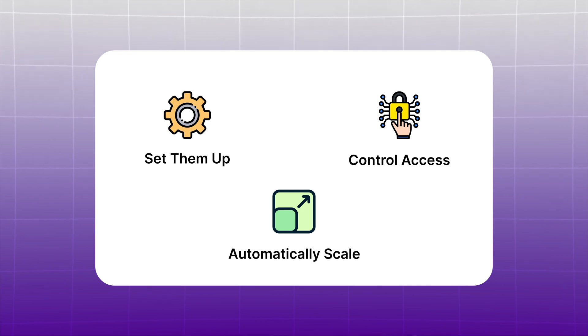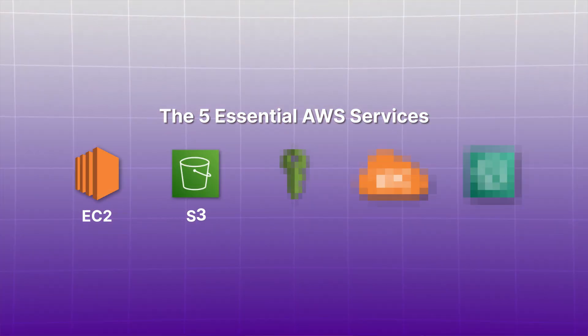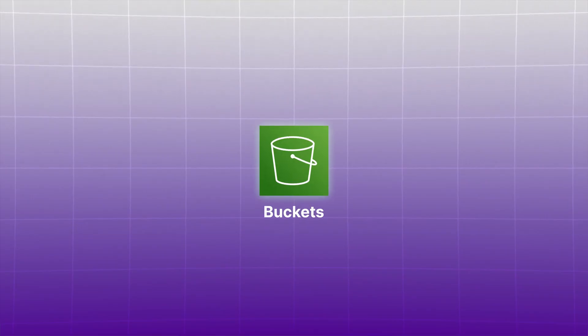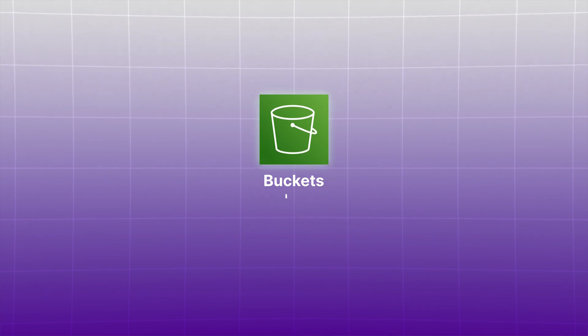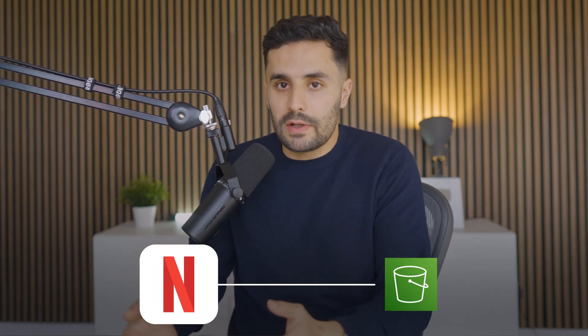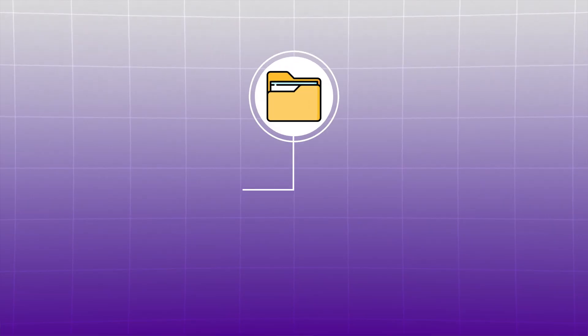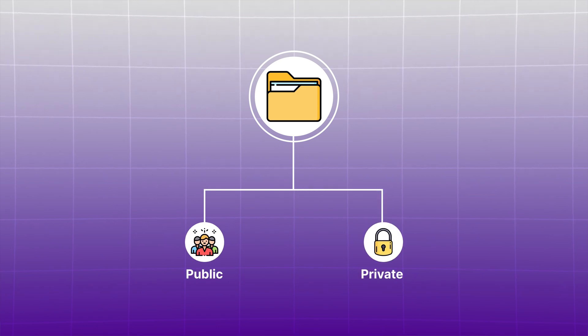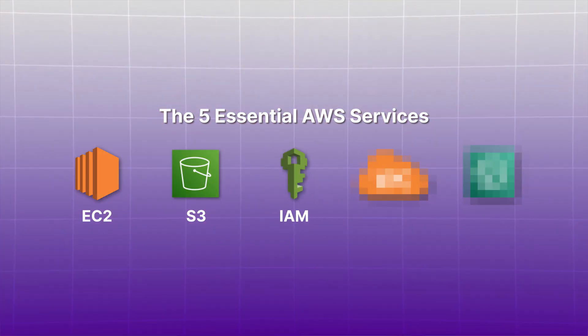You'll learn to set up EC2 instances, control access through security groups, and make them automatically scale up or down based on demand. S3 solves the storage problem by giving you essentially unlimited space in the cloud. You create buckets — think of them as super-powered folders that can store anything from small documents to massive video libraries. Companies like Netflix use S3 to store their entire video library, and countless websites use it to store images and files.